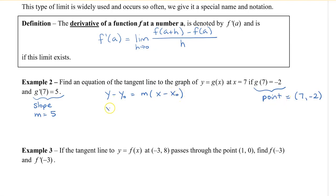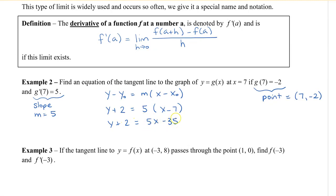Using this information, we can write the equation of the tangent line because we know our point and our slope. So we plug in: y minus negative two, which is y plus two, equals five times x minus seven. We can leave it in point-slope form or change it to slope-intercept form, and subtract two to get negative 37.